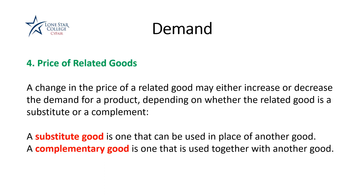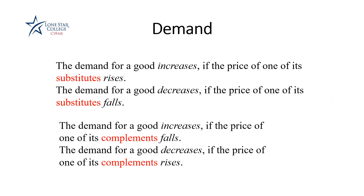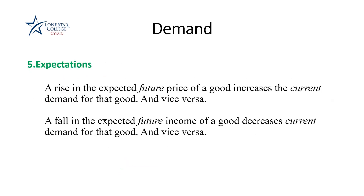Complementary goods are those you always purchase or use together — hot dog and hot dog bun, or coffee and cream. If coffee becomes more expensive, your demand for cream will go down, because they are complementary goods. Most goods we know are actually not related to each other.